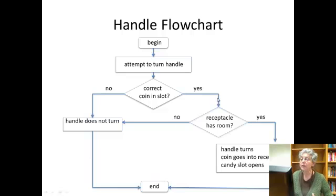Now if there is a correct coin, there's a further step. So we come over here on the yes side. And now we have to ask, does the coin receptacle have room to accept that coin? Because if not, we want it to stop from turning and nothing to happen. So if the answer here is no, we're going to reuse this event of the handle does not turn. And again, that's the end.